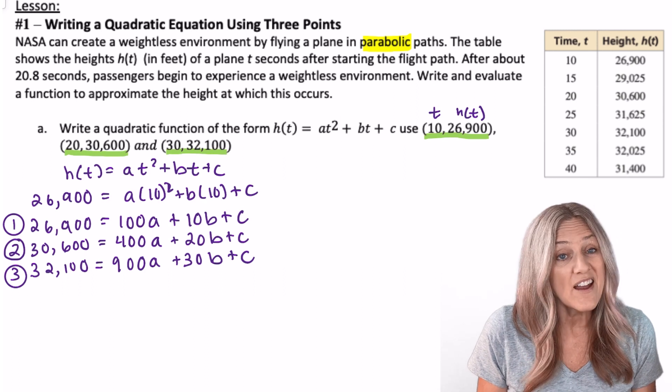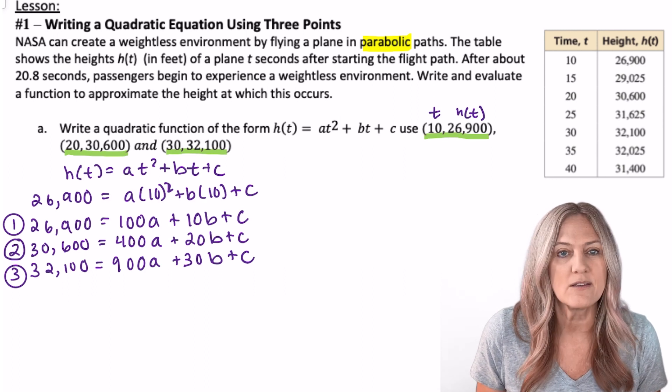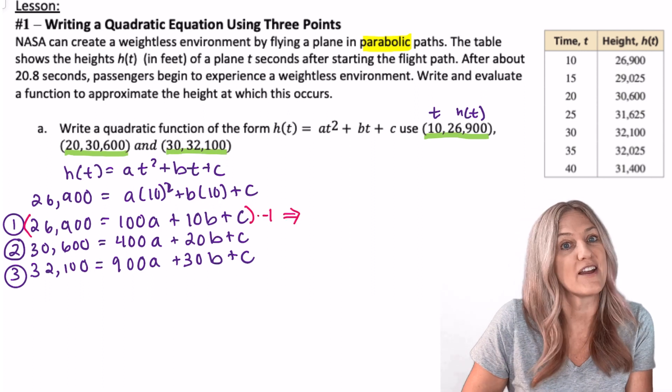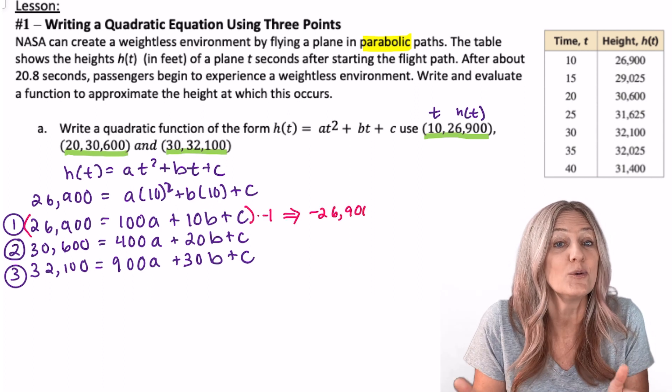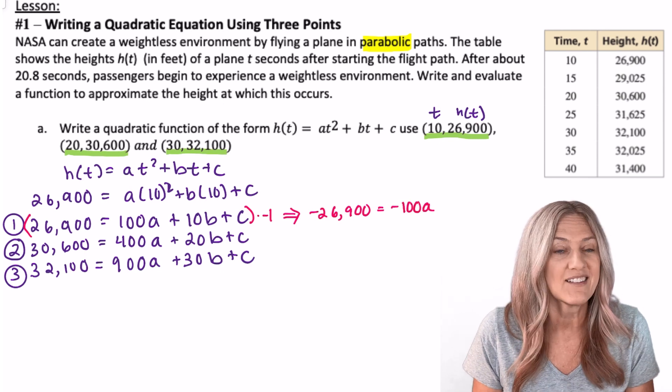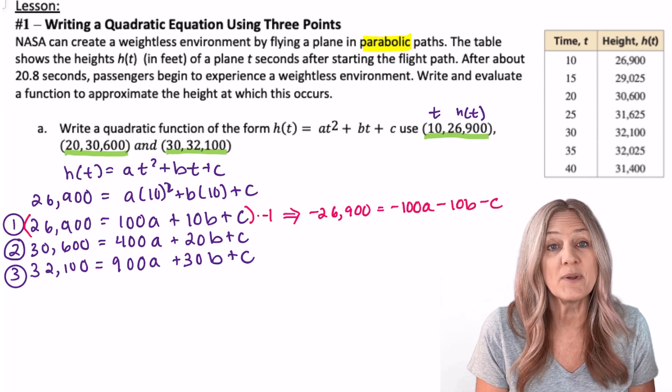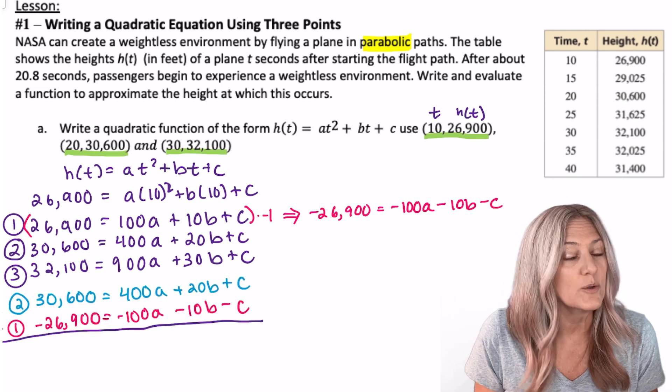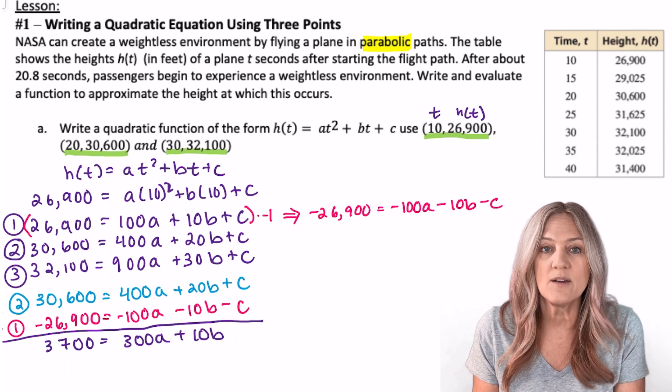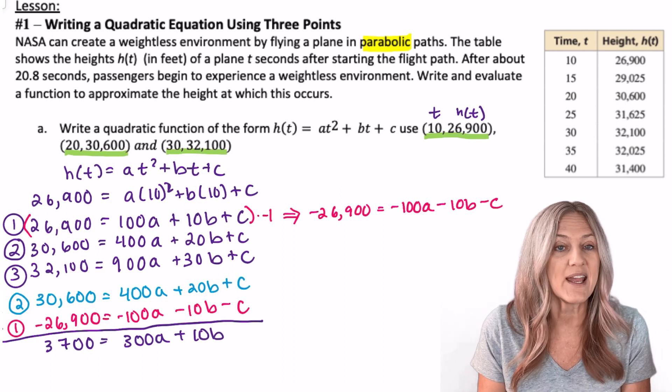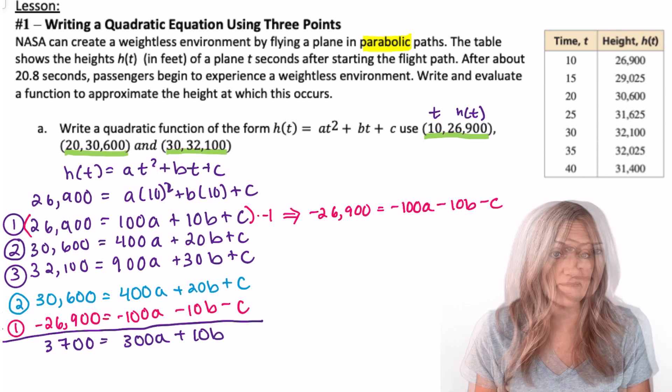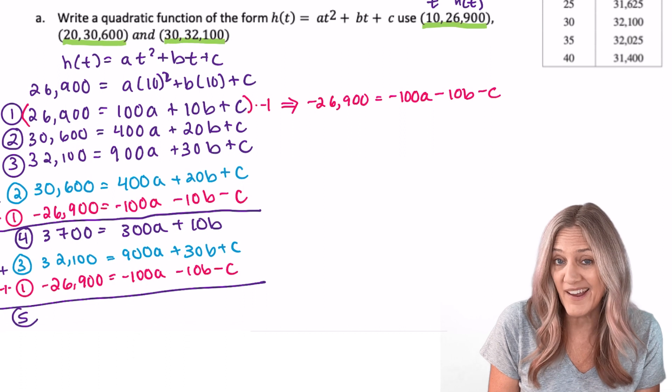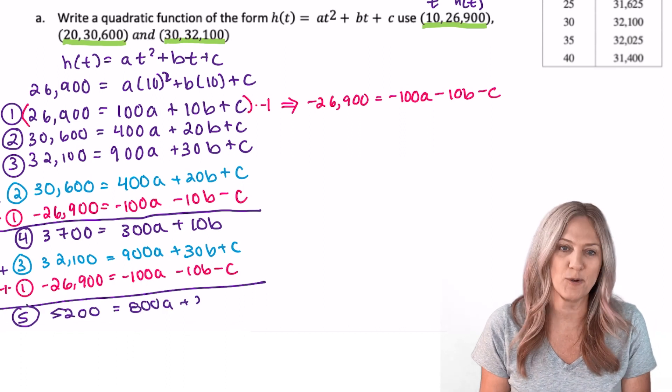Well one nice thing is every equation has a plus c. So if I just make one of those equations a minus c I'll be able to add to the other two and get two two-variable equations. So let's take equation one and multiply through by negative one. Next let's add equation two to the equation one that we multiplied by negative one creating our new equation four. To create equation five I'm going to take that first equation multiply by negative one and add its result to equation three.